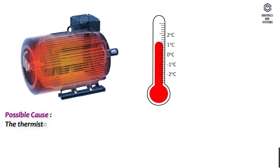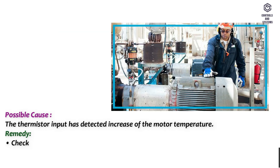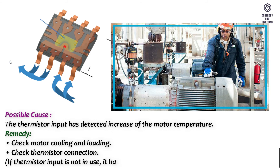Fault code 29 – Thermistor fault. Possible cause: the thermistor input has detected an increase in motor temperature. Remedy: check motor cooling and loading, check thermistor connection. If the thermistor input is not in use, it must be short-circuited.